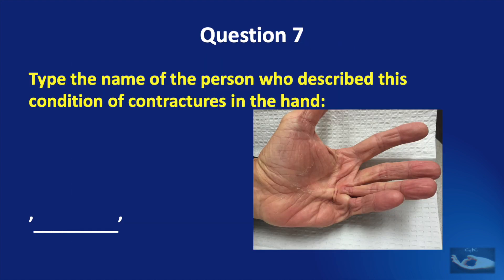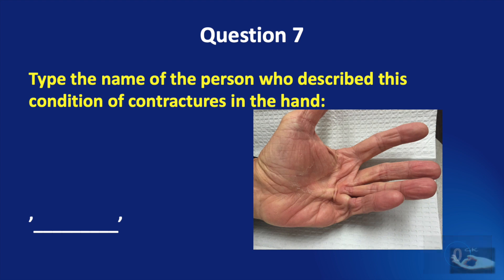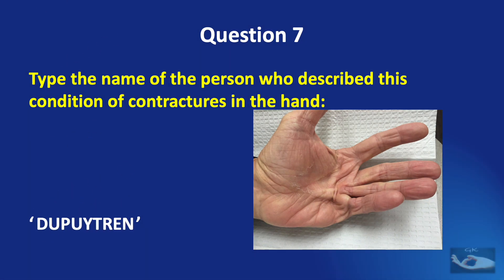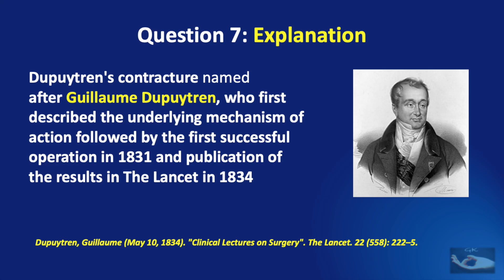Question number seven: type the name of the person who described this condition of contractures in the hand. And the answer is Dupuytren. Dupuytren's contracture is named after Guillaume Dupuytren, who first described the underlying mechanism followed by the first successful operation in 1831, and publication of results in the Lancet in 1834.